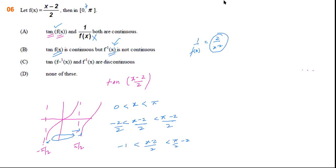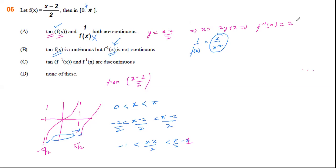Let me clarify this important point. Setting y equal to (x minus 2) by 2, we get x equal to 2y plus 2, so f inverse of x equals 2x plus 2. This is a linear function and is everywhere continuous. Therefore option b — which states f inverse of x is not continuous — is incorrect. If the answer key lists b as correct, please make a correction: the correct statement is that f inverse of x is continuous.